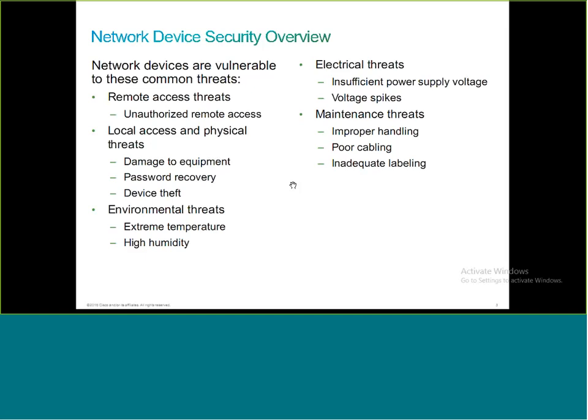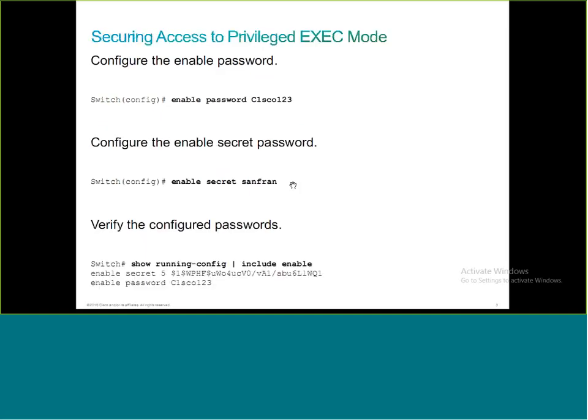The first thing we'll talk about when securing access to privilege mode is the enable password. When you connect to a router or switch, you first get into user mode. When you type 'enable', by default you are not prompted for a password and go directly to privilege mode because there is no enable password configured. There are two options available: enable password and enable secret.